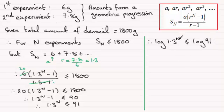Then we use the power rule for logs. We can say that this is the same as N times the log of 1.3, and that will be less than or equal to log of 91.